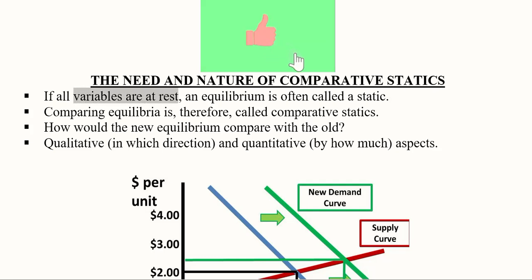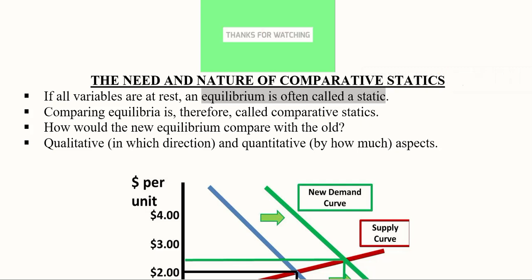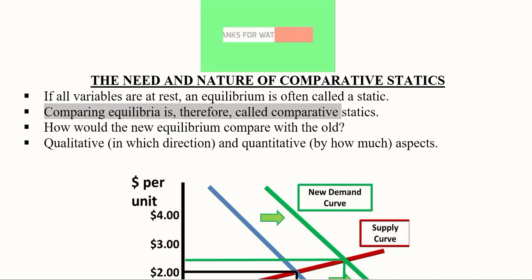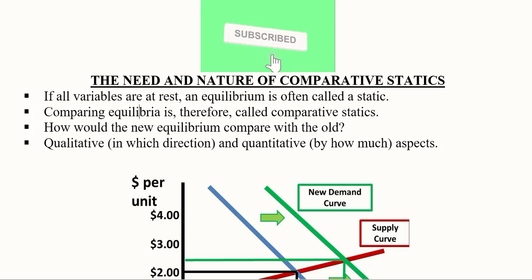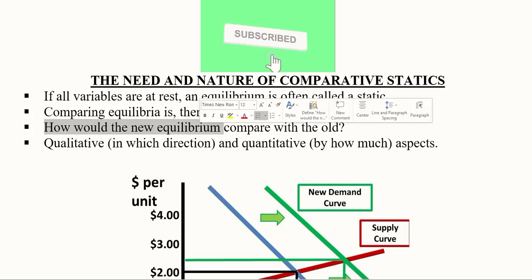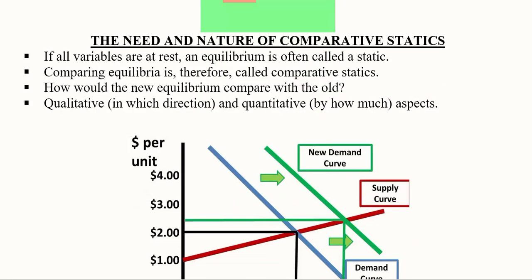If all the variables are at rest, it is an equilibrium and it is considered as static. There is dynamic equilibrium as well, but that is not a part of this course. Comparing equilibria is therefore called comparative statics. If we have more than one equilibrium, we can compare them and come up with comparative static analysis.